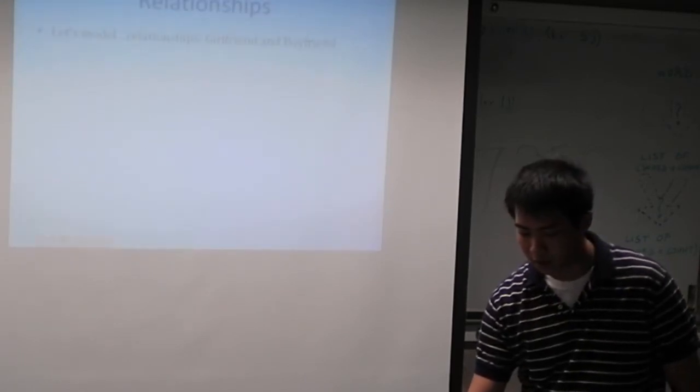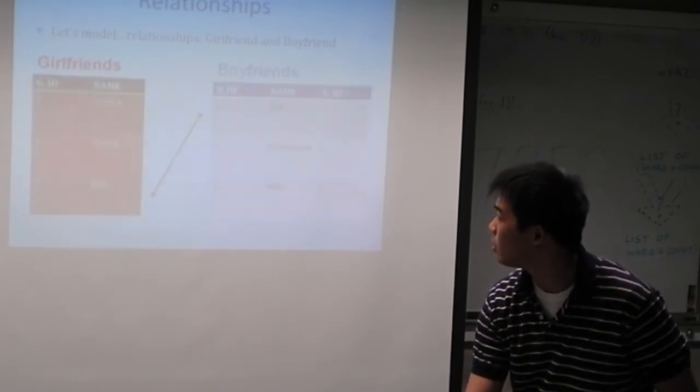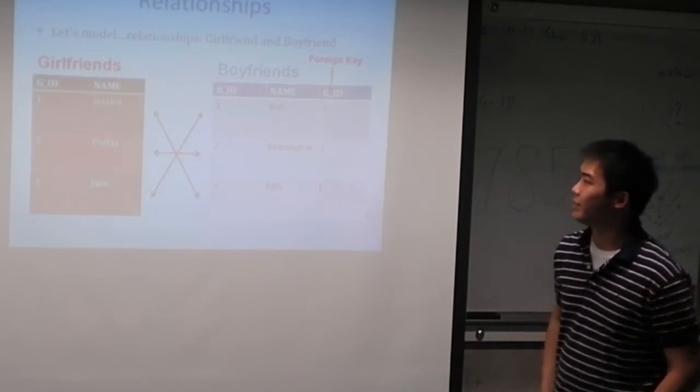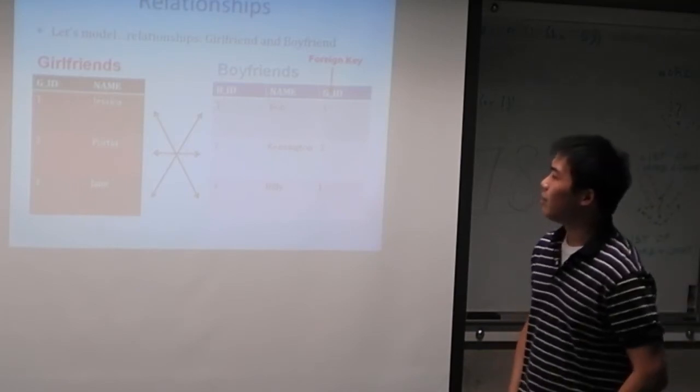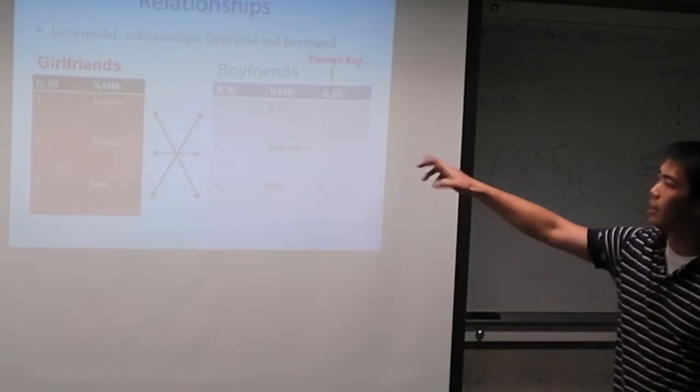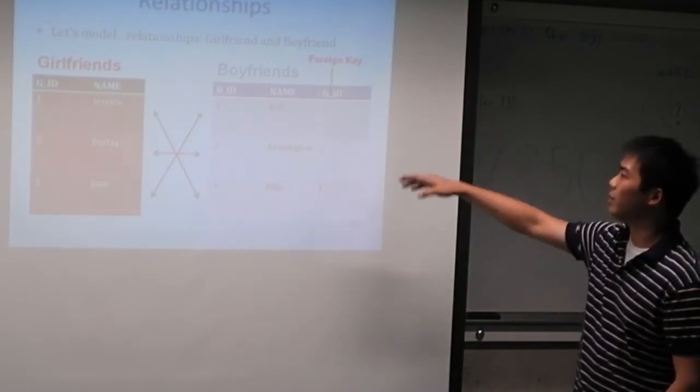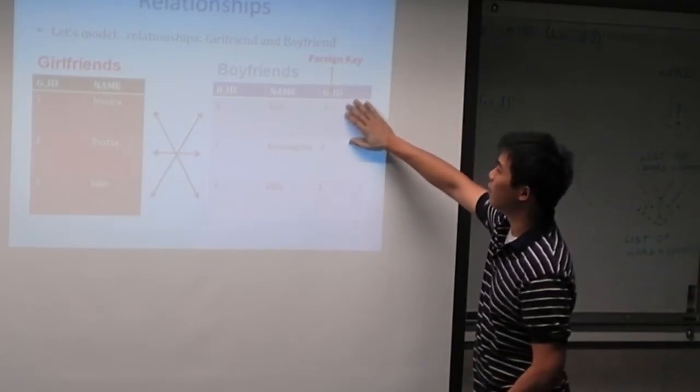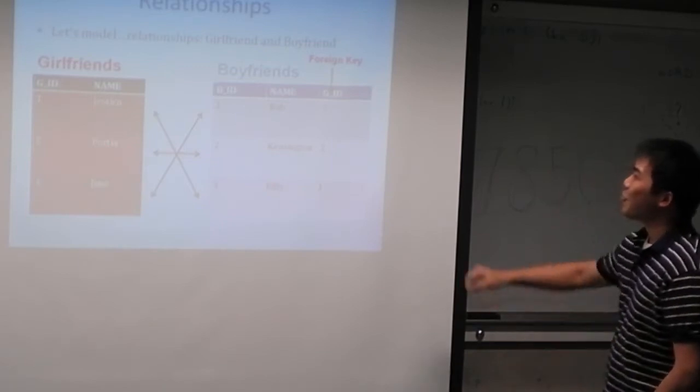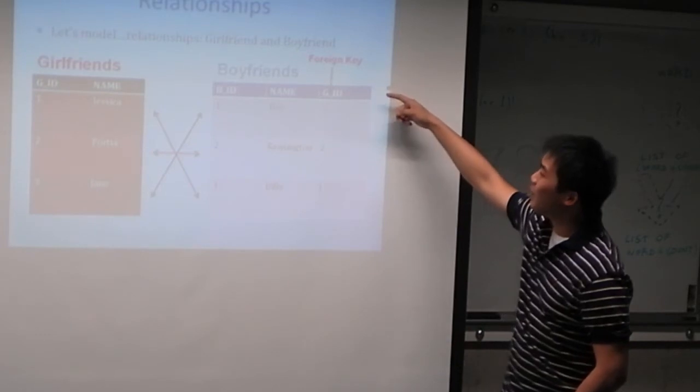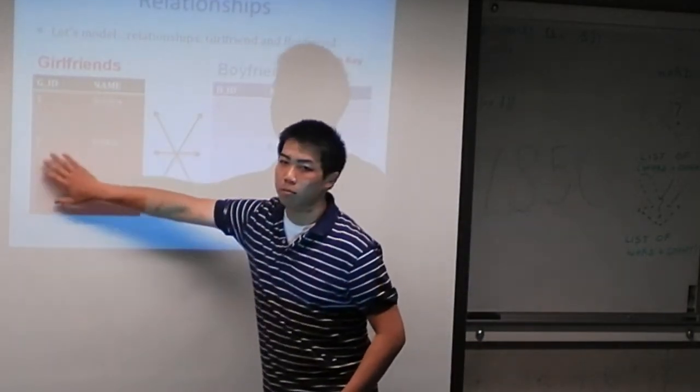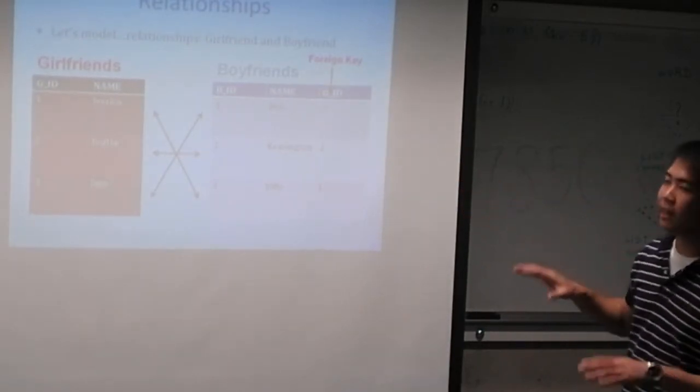So we're going to go through an example where we model relationships. One example we're going to use is the relationship between boyfriends and girlfriends. And as we can see here we have two tables. A girlfriends table and a boyfriends table. The girlfriends table has two columns: the girlfriend ID and the name of the girlfriend. And the boyfriends table has a boyfriend ID along with the name of the boyfriend. And something really cool here called which is a girlfriend ID. So basically the girlfriend that this boyfriend belongs to. What's really interesting about this is that it's something called a foreign key. Meaning that this column right here references this column over here.